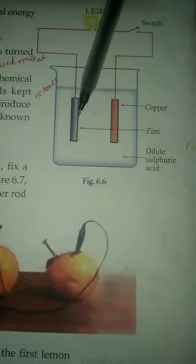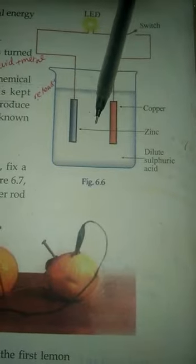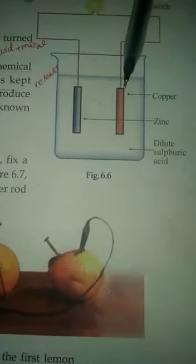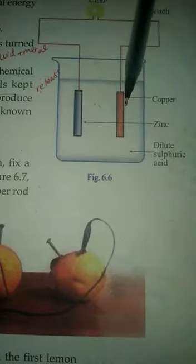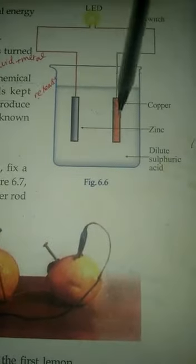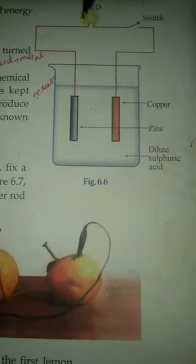Acid reacts with the metals to produce electricity. These are two metal rods, so acid reacts with this metal rods and they produce electricity.